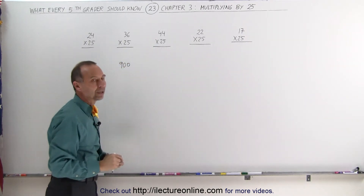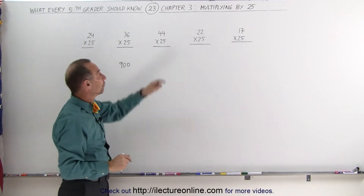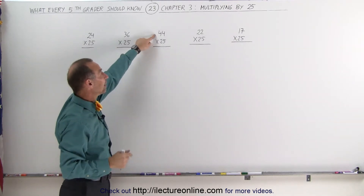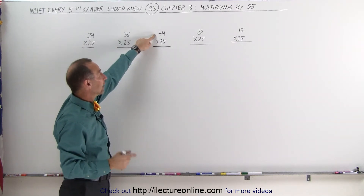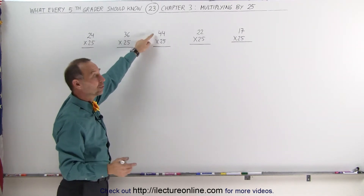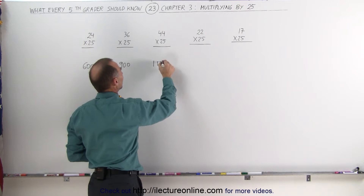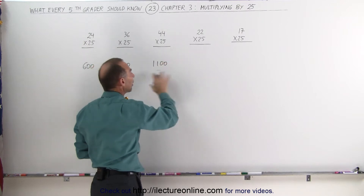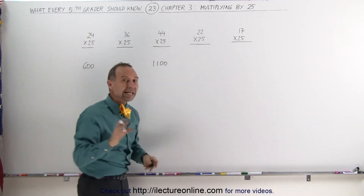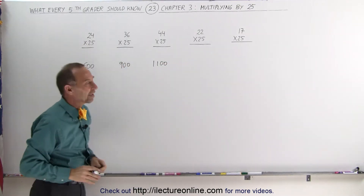How about 44 times 25? 44 divided by 4 gives you 11, add two zeros, gives you 1100. So that all works out really neat and really fast.